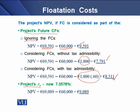We will have some improved valuation if we consider the flotation cost with the tax effect. Alternatively, we have the option to consider flotation cost as the project's cost of equity, which gives a cost of equity of 7.3578%. Under this approach, the project's net present value is $9,089.